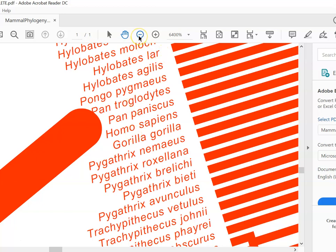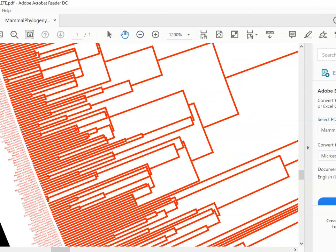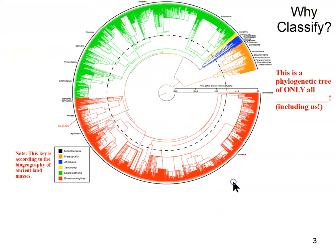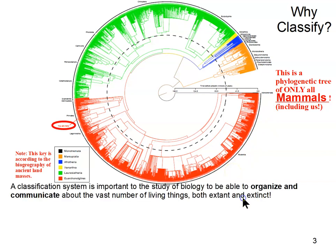So what is it? It's a phylogenetic tree of all mammals — just mammals — thousands and thousands of species. All the branches represent evolutionary relationships: the closer species are on the tree, the more closely related they are. We're working on both extant and extinct species, though it's practically impossible we'll ever find every species that has ever lived on the planet.